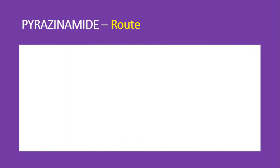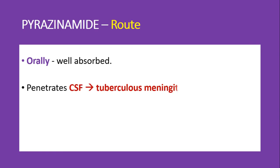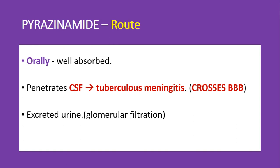Regarding route of administration and pharmacokinetic properties, pyrazinamide is administered orally. It has good absorption from the gut and good penetrating capability into the CSF. It easily crosses the blood-brain barrier, especially in cases of tuberculous meningitis where the meninges are inflamed, making it effective in the treatment of tubercular meningitis.